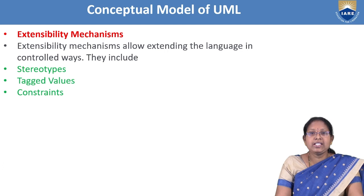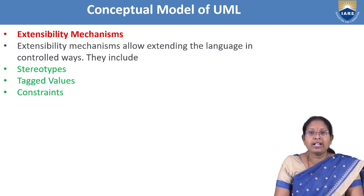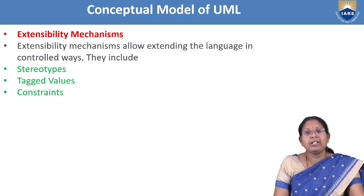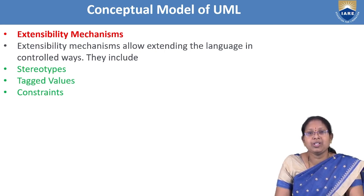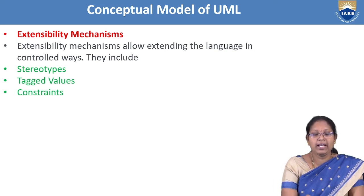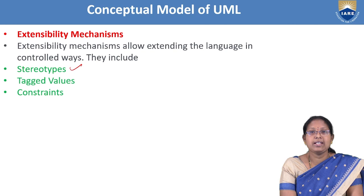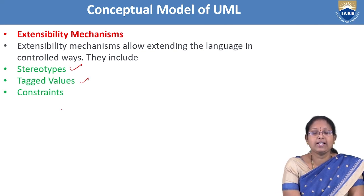The last common mechanism is the extensibility mechanism, which allows extending the vocabulary, properties, and syntax of the system. There are three kinds of extensibility mechanisms: stereotypes, tagged values, and constraints.